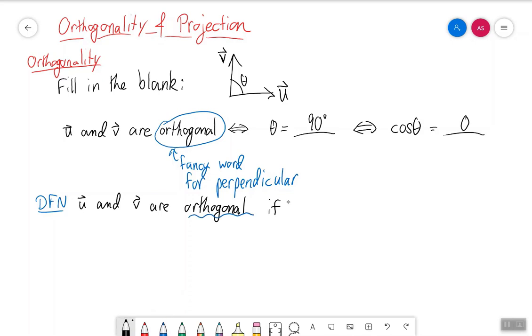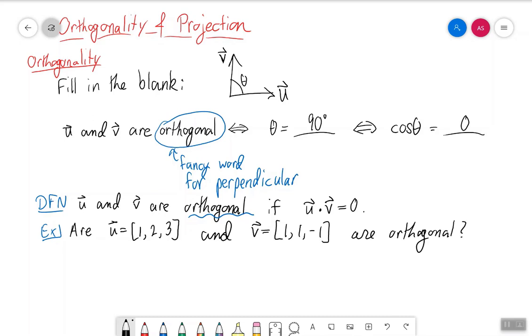For example, we can ask if the vectors u equal 1, 2, 3 and v equals 1, 1, minus 1 are orthogonal. Well, to check this, we don't have to go through this figuring out the whole angle thing. All we need to do is take the dot product of the two vectors.